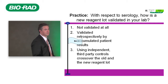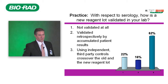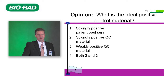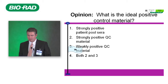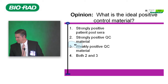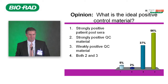We have a solid 54 to 55 respondents answering these questions. Using third-party independent controls with crossover of the old and new reagent lot was considered the ideal approach. The ideal positive control material should include both strongly positive and weakly positive QC material.